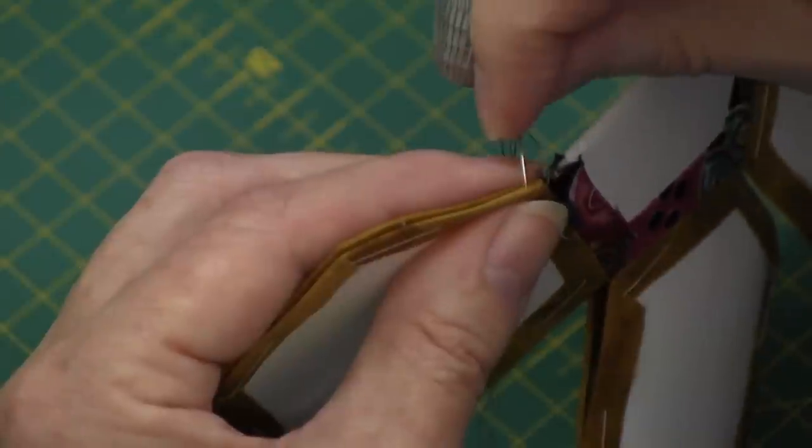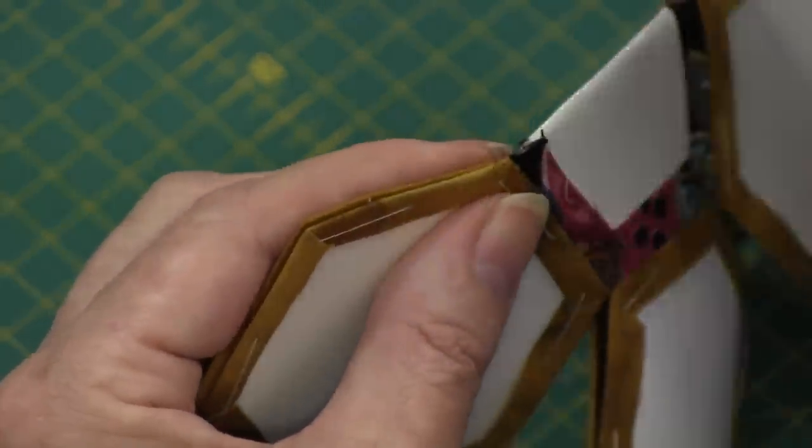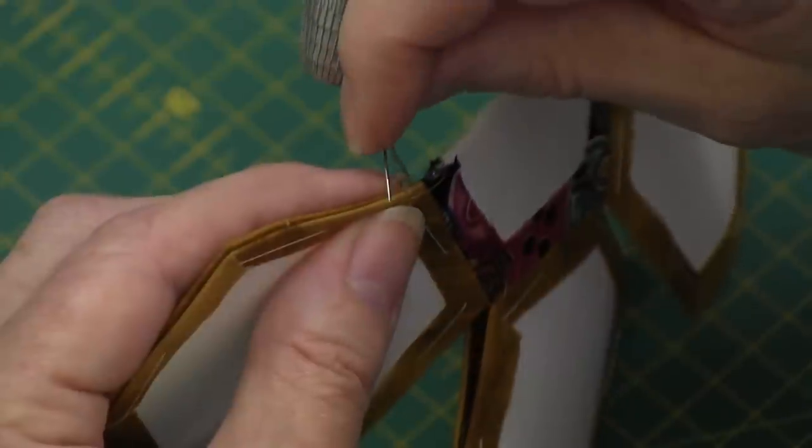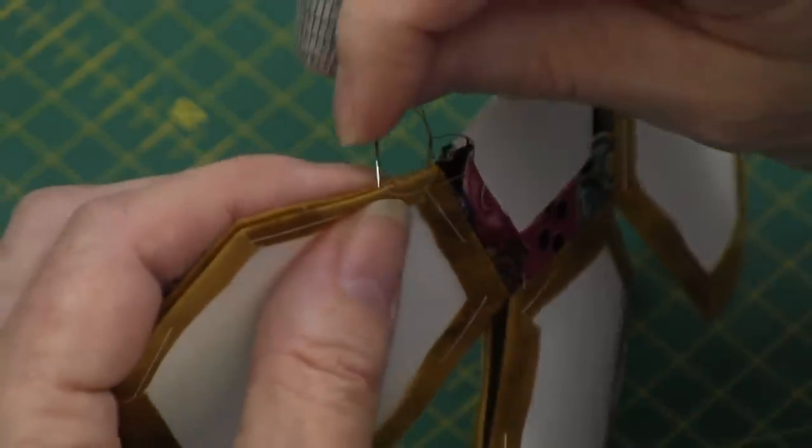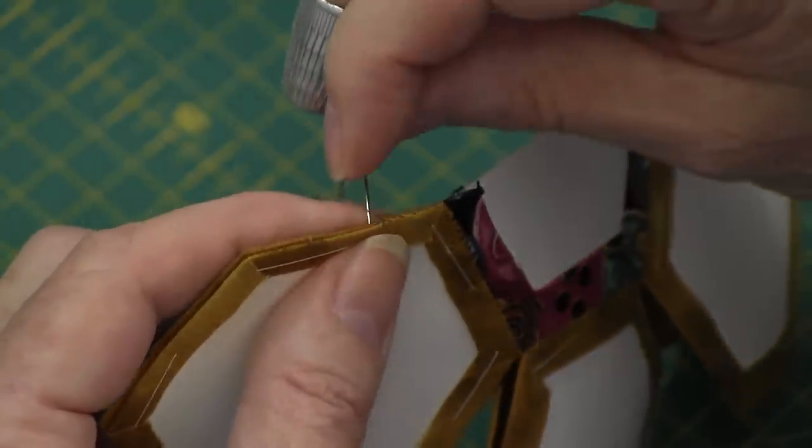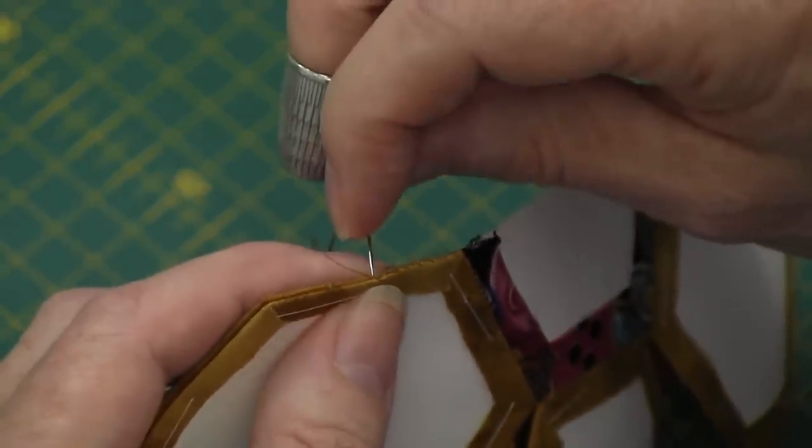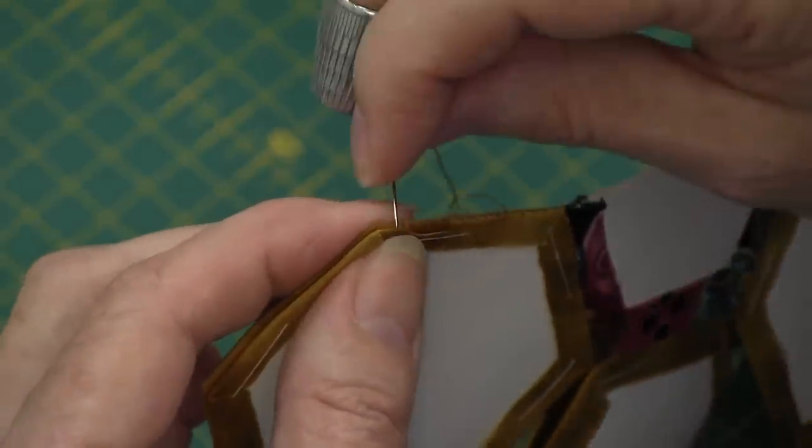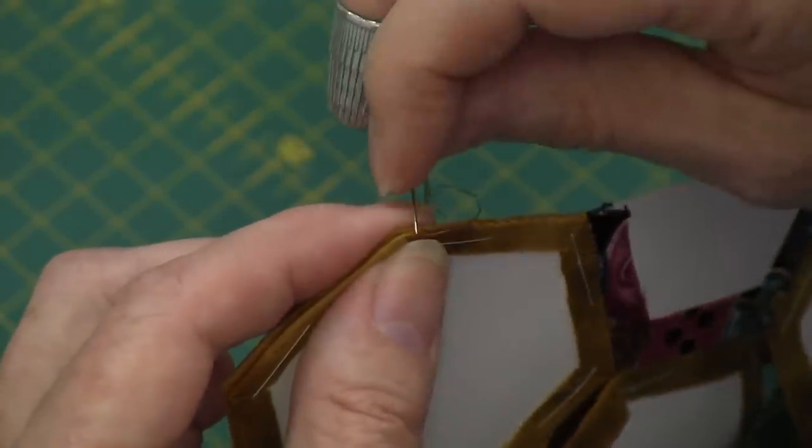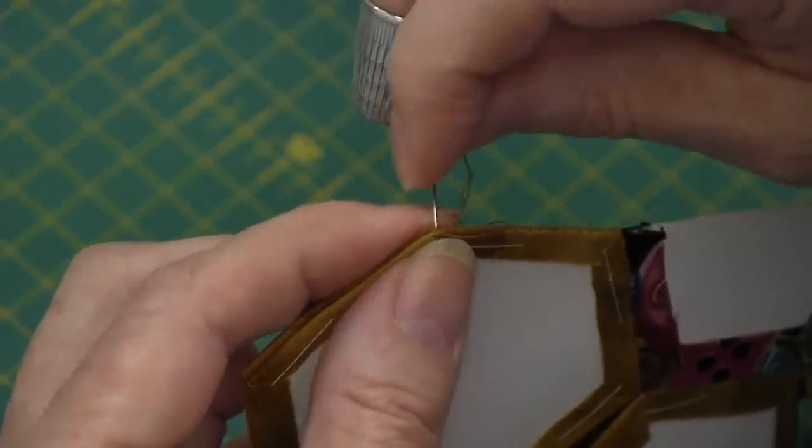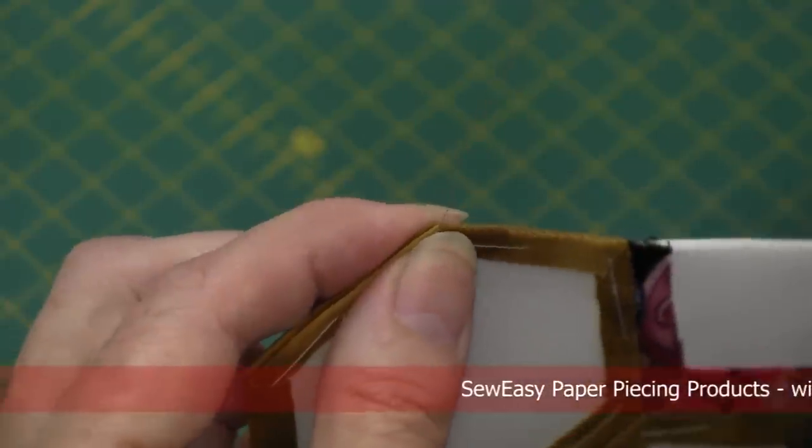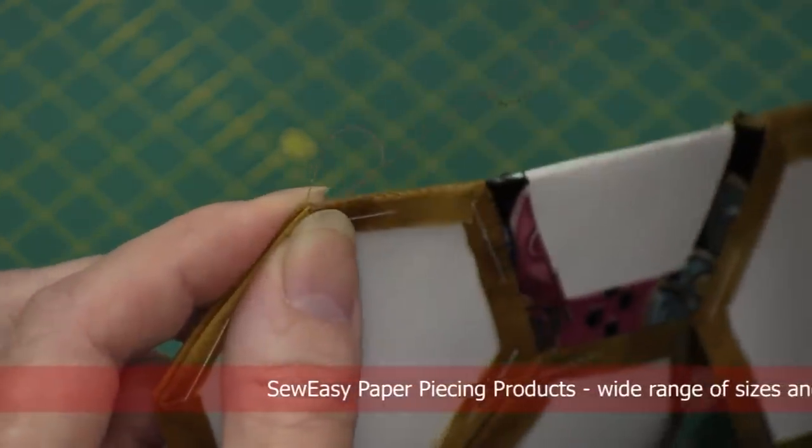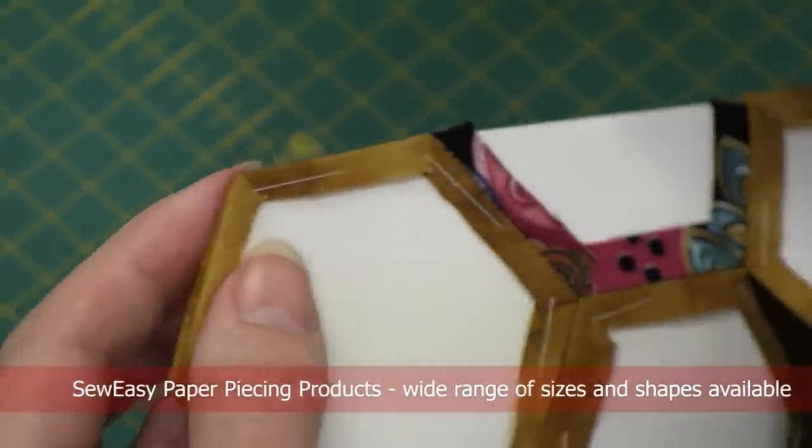And then continue along doing your whip stitch over the two shapes, making sure that you only collect with each bite of the needle only two to three threads of each fabric shape. Continue with your whip stitch until you get to the end of the shape. When you get to the end of the shape, take two stitches right into the very pointed corner. The second stitch, we're going to put the needle through the loop and that locks the stitches off. And then we're going to bury the needle and the thread into the seam allowance on the back and then snip it off.